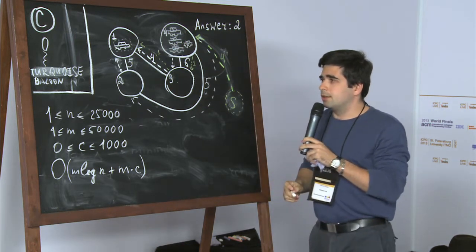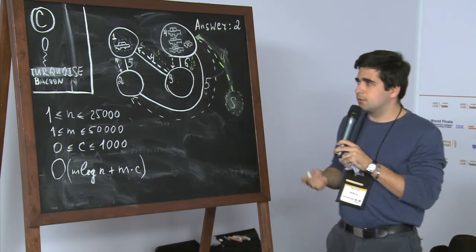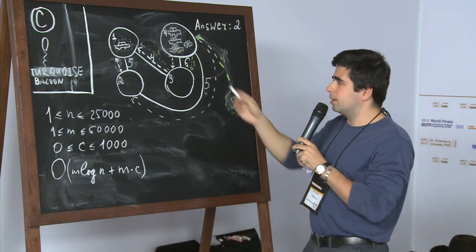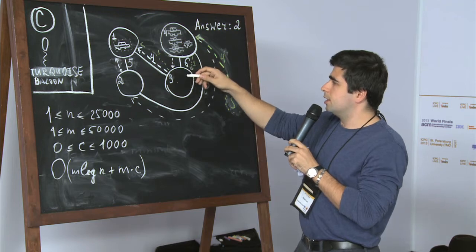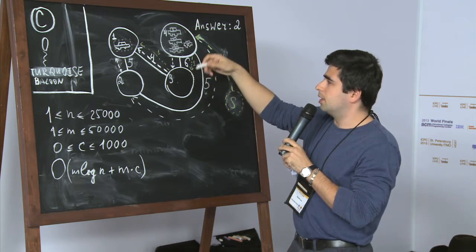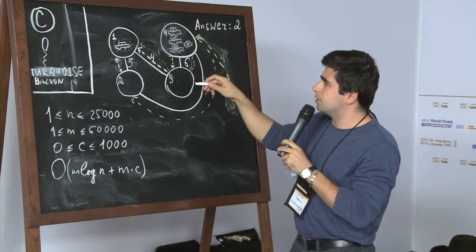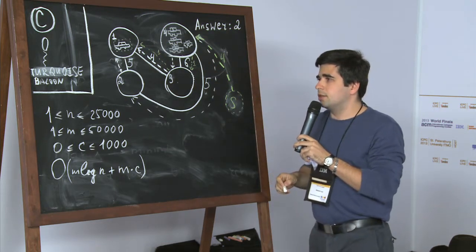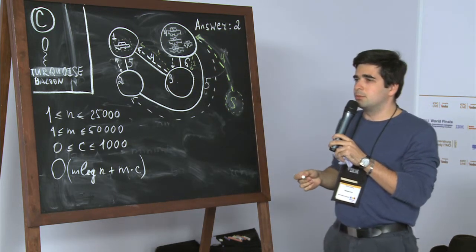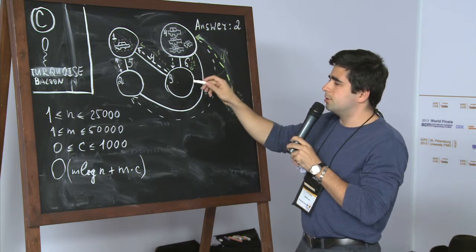And that is a standard maximum flow problem where you have a graph which consists in this case only of the edges on the shortest paths from start points to the destination and you have to find the maximum possible number of edge disjoint paths. So this is done by maximum flow algorithm.